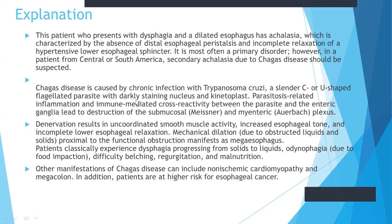Chagas disease is caused by a chronic infection with Trypanosoma cruzi, which is a slender C- or U-shaped flagellated parasite with a darkly staining nucleus and kinetoplast. Parasite-related inflammation and immune-mediated cross-reactivity between the parasite and the enteric ganglia lead to the destruction of the submucosal and myenteric plexus. The denervation results in uncoordinated esophageal muscle activity, increased esophageal tone, and incomplete lower esophageal relaxation. The mechanical dilation proximal to the functional obstruction manifests as a mega-esophagus.